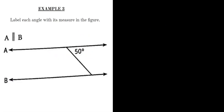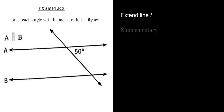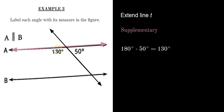Example 3 looks a little different. We extend line T as the transversal through both parallel lines A and B. With 50° given, we use that as our supplementary line: 180 − 50 = 130°. Using vertical angles, we get 130° and 50° for all four angles at line A.